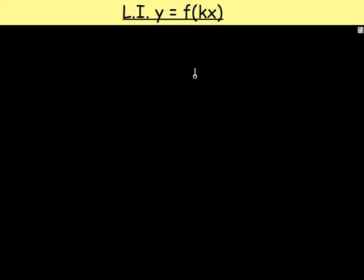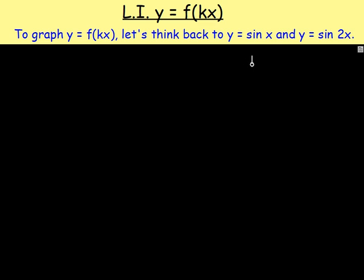Let's think back to previous years. Really what we're doing is we're putting a number in front of x. When have we done that in the past? Well think back to graphing y equals sin x and y equals sin 2x. All we did was we put a number in front of x. How did that change the graph?